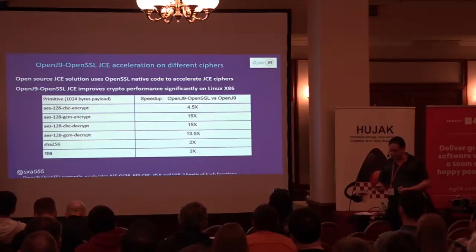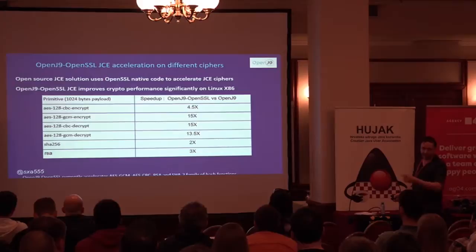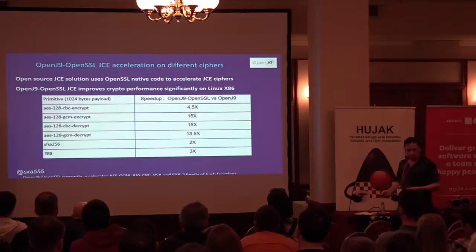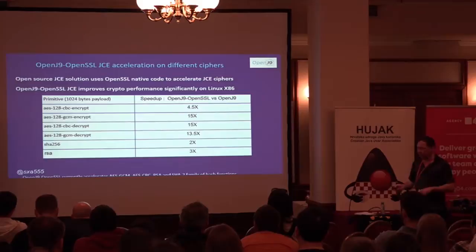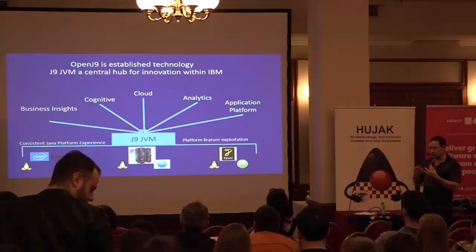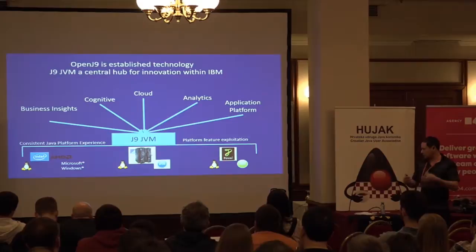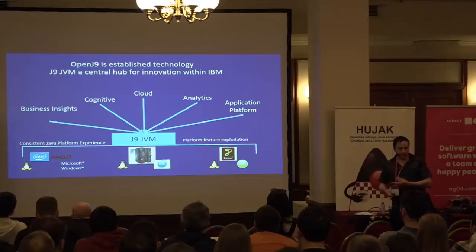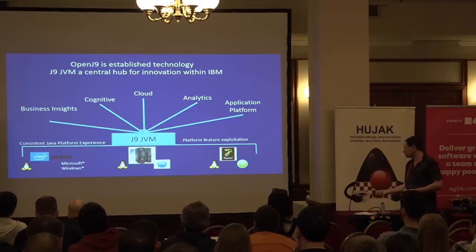We've also added OpenSSL support in OpenJ9 to accelerate some of the encryption within the JVM, and you can see significant improvements there. This has been added in the last two releases of JDK 8 and JDK 11. We may try to contribute that back into OpenJDK, but we've been concentrating on getting it in a form we're happy with first. This stuff isn't new — it's all established, so it should be production ready. IBM has been using it for years across all their software platforms.